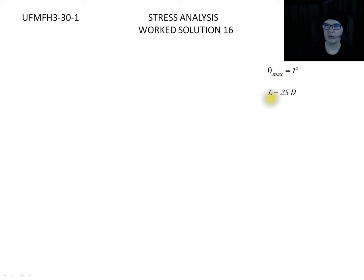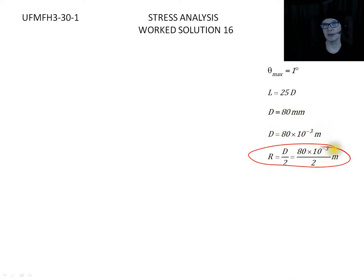We have one degree. We're told the length of the shaft is 25 times the diameter. We're told the diameter is 80 millimeters, so I'll convert that into meters. I'm going to need to find the radius because I'm going to be using the torsion form of the engineers equations, so I'll find the radius.